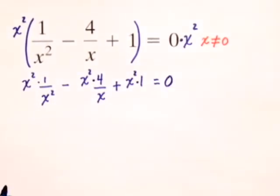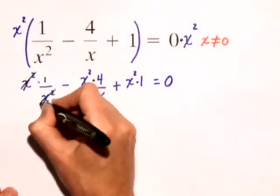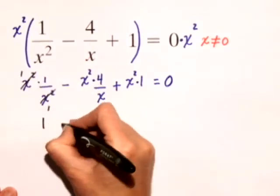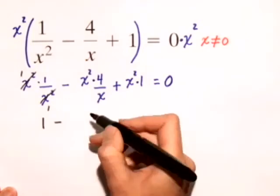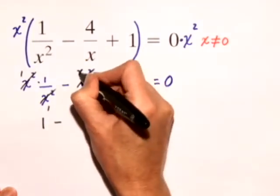Now, in the next step, we should see that our fractions will cancel. x squared divided by x squared just gives me 1. So 1 times 1 is just 1, minus. In this case, x squared divided by x simplifies to x.